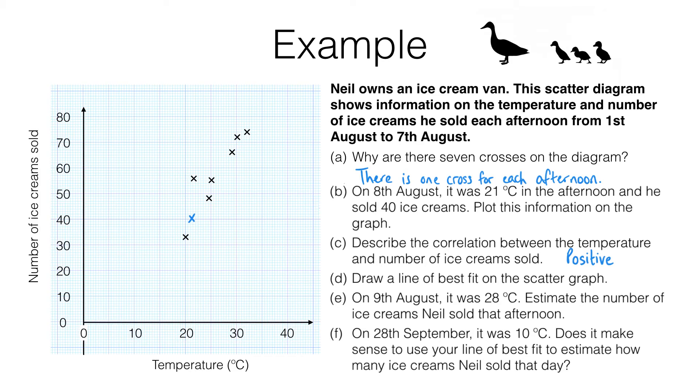In part D, we need to draw a line of best fit. This is a straight line that tries to be close to the points plotted here. Now there is a mathematical way to do this accurately, but at GCSE you just do this by eye and try to get a reasonably good best fit line. Typically you want to have roughly half the points above your best fit line and about half the points below. So this here would be suitable.